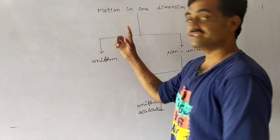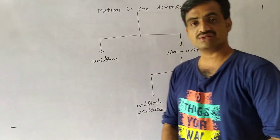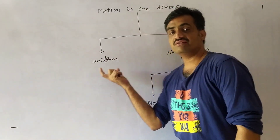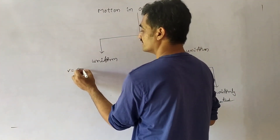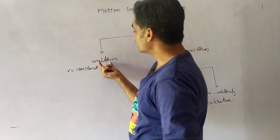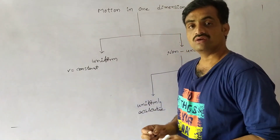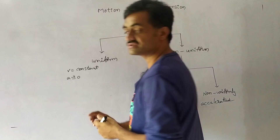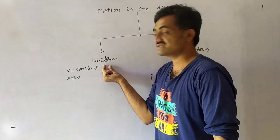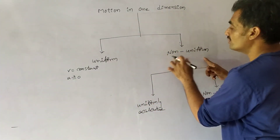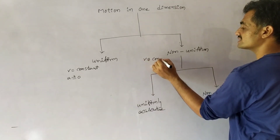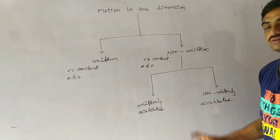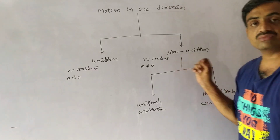Motion in one dimension is classified as uniform motion and non-uniform motion. When velocity is constant, we consider it as uniform motion, and acceleration a = 0. In the case of non-uniform motion, velocity is not constant, meaning acceleration is not equal to zero.